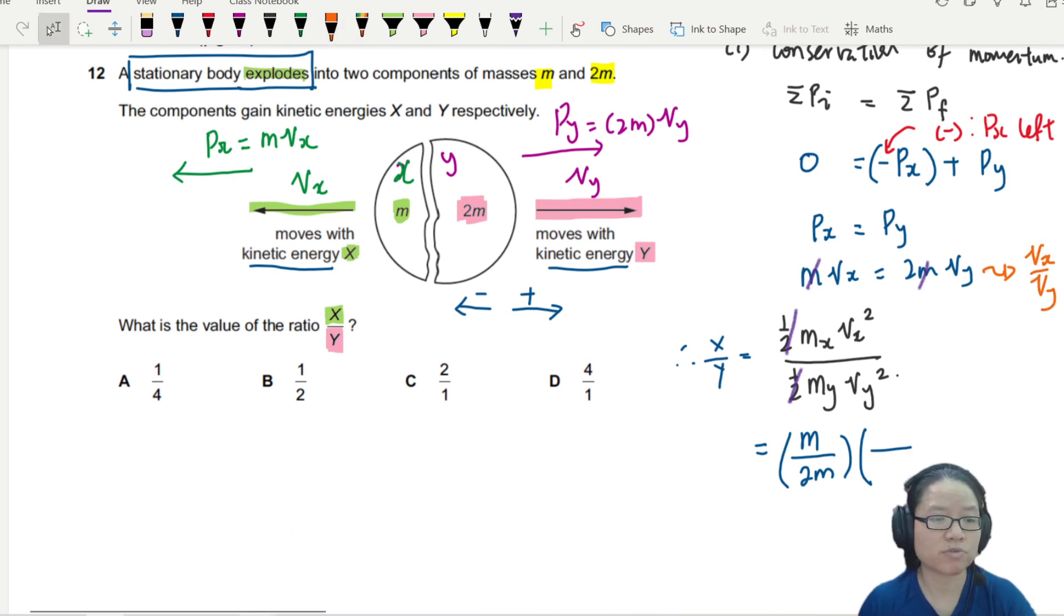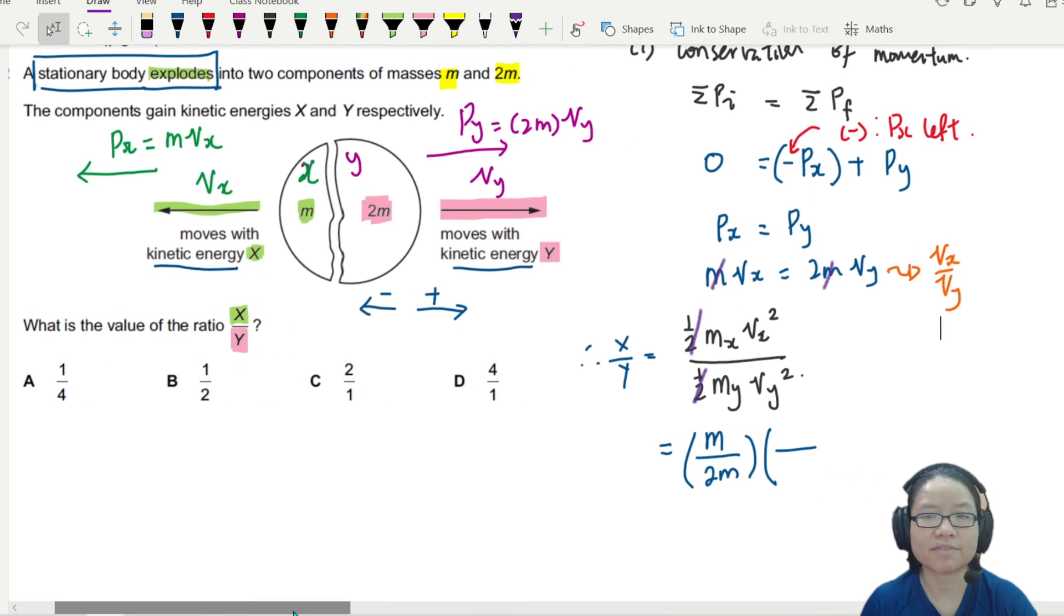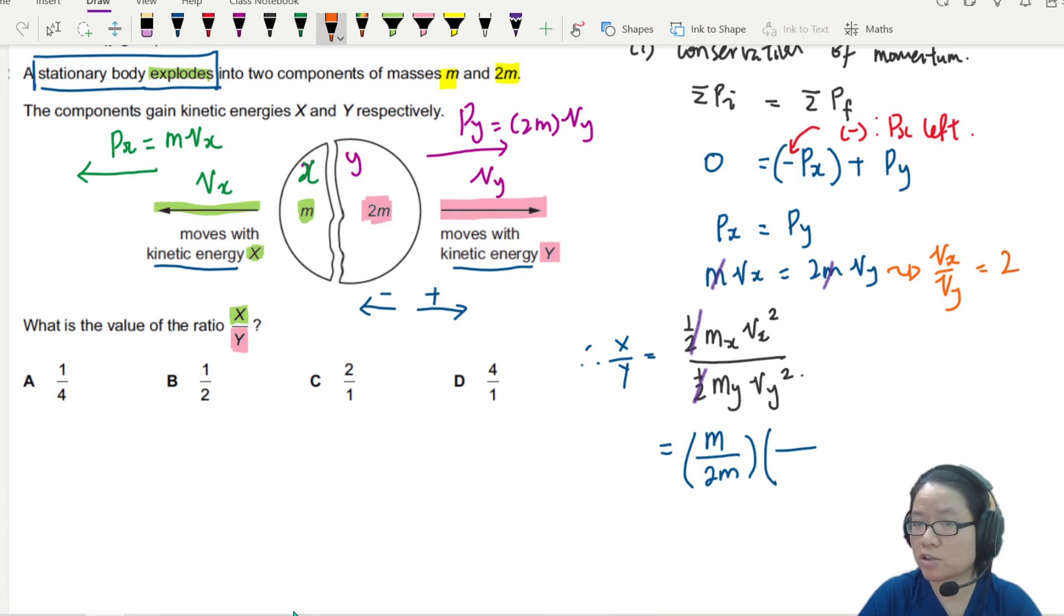Vx over Vy. Let me move the screen a bit. Vx over Vy. I rearrange. Because Vx is 2 Vy. So Vx over Vy is 2. So this one will be 2.